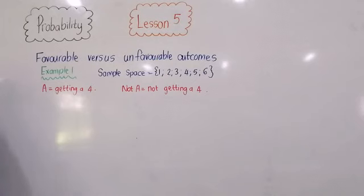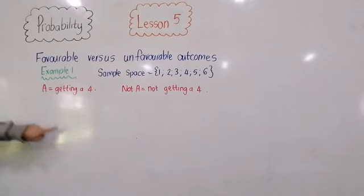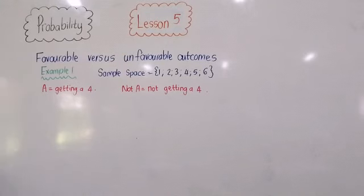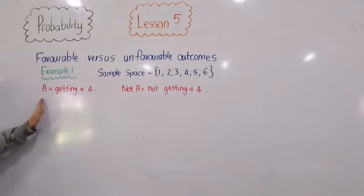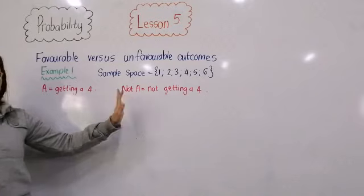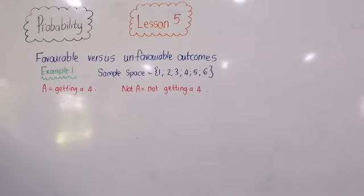Let's read example one. A six-sided die is rolled twice. The given tree diagram here represents the following events: A would be getting a four, and not-A would be not getting a four. The first question wants us to fill in the probability fractions on the tree diagram. Let's talk about what our sample space for each of our events are. Event A is getting a four, and event not-A is not getting a four.